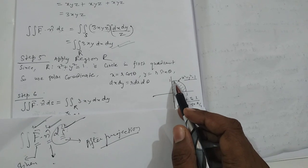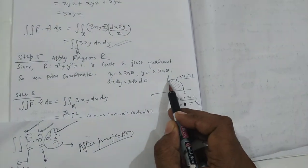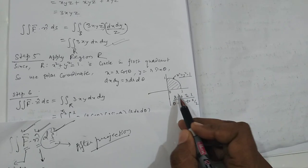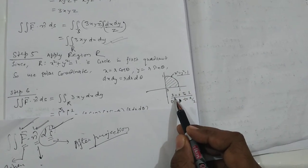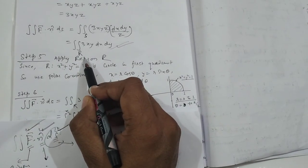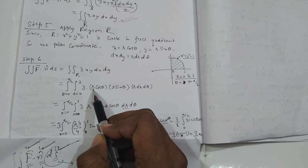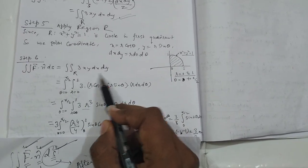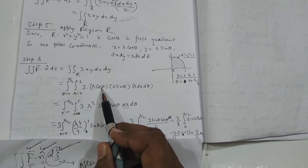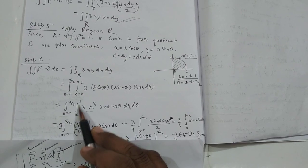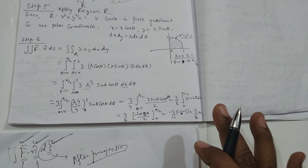Since the sphere lies in the first quadrant, the projection (quarter circle) also lies in the first quadrant. So the limits are: r from 0 to 1, and θ from 0 to π/2. The integral becomes ∫₀^{π/2} ∫₀¹ 3r³ sinθ cosθ dr dθ. Evaluating this gives the final answer: 3/8.